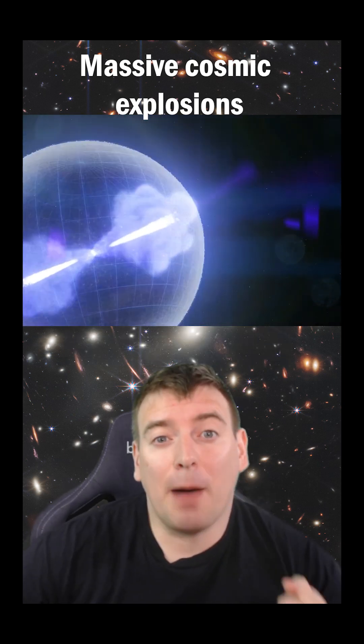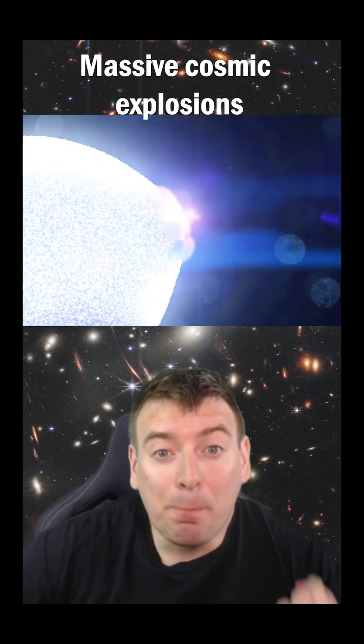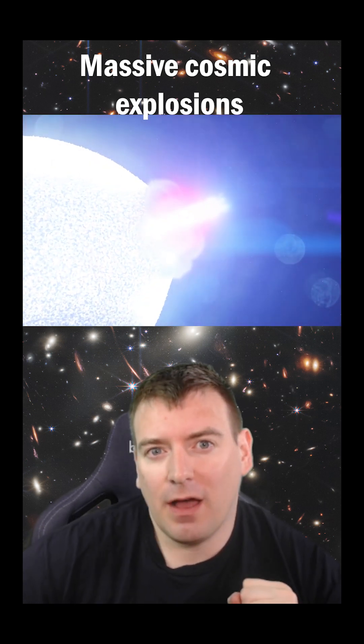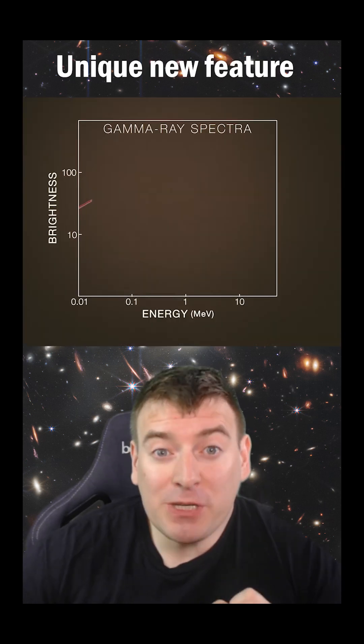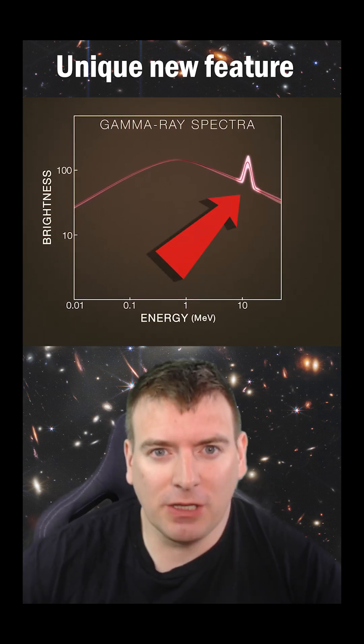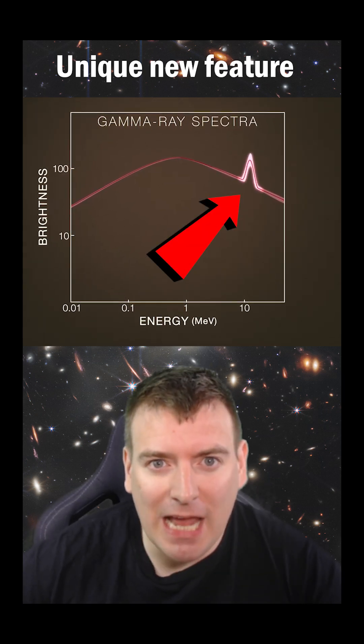Matter falling into the star powers oppositely directed particle jets which blast out of the inner layers of the star at nearly the speed of light. The boat's light spectrum is unique because it reveals a sharp emission line at around 12 million electron volts.